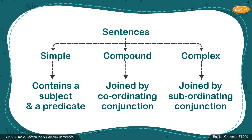A sentence is a group of words which makes a sense. Depending on the grammatical structure, sentences can be defined into three types: simple, which contains a subject and a predicate; compound, joined by coordinating conjunction; and complex, joined by sub-coordinating conjunction.